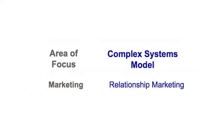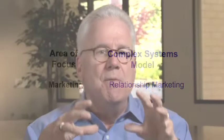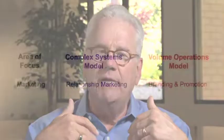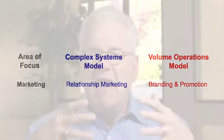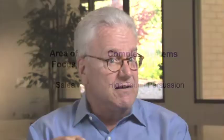When you go to the marketing side of the house — whether you're looking at marketing or sales or service — again, very different. Marketing in the complex systems model is called relationship marketing, whereas in the consumer model it's called branding and promotion. These are very, very different models, and often marketing executives or other executives get confused because they apply the wrong model in the wrong context.